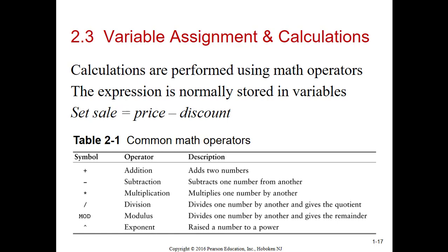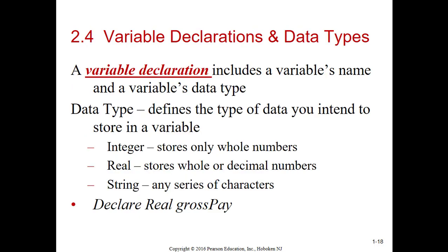Calculations are performed using math operators. As you can see in the table, the plus is addition, the minus is subtraction, the asterisk is multiplication, the forward slash is division, mod is modulus, and the caret top is exponent. Look what mod says: divides one number by another and gives the remainder. If you do a division, it gives you the whole number and the remainder. If you do a mod, it only gives you the remainder. For instance, if you do a mod and the remainder is one, what would be stored in the variable would be one. The exponent raises it to the power of. So if you said caret top three, whatever the variable was or the number was, it would go to the third power of that number.